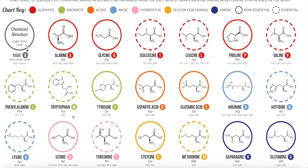The polar uncharged group is uncharged because they are not acids or bases for the most part. Serine, threonine, cysteine, asparagine, and glutamine are not acidic or basic, so they keep an overall neutral charge. At physiological pH, around 7.4, these will be found in their zwitterionic form, meaning they have both a plus and a minus charge on the same molecule that cancel out. The amino group will be protonated and the carboxyl group will be deprotonated at 7.4.